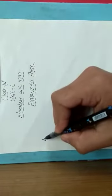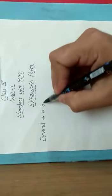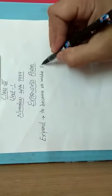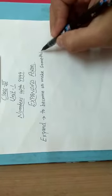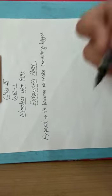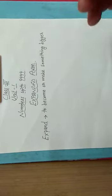Now in this video we will learn how to write the number in expanded form. First of all, what do we mean by expand? Expand means to become or make something bigger. So here we expand the number by writing the place value of each digit.